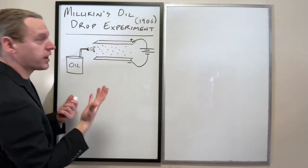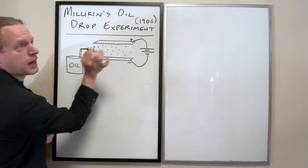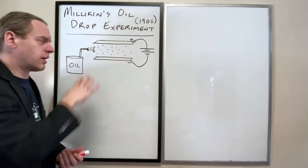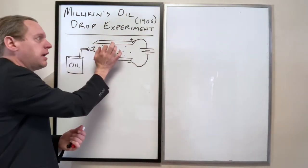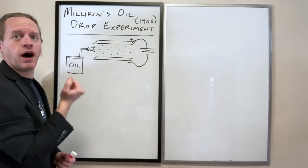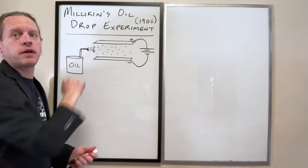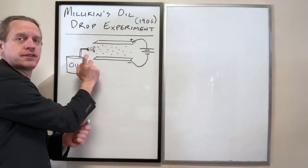And one of the things that Millikan did was he actually literally had a microscope set up so that he could peer down the axis of this region where he's going to apply the electric field. And so you can literally focus on one or a handful of these microscopic oil droplets, and you can watch what happens as you change the environment here. So we're going to spray a fine mist in here.